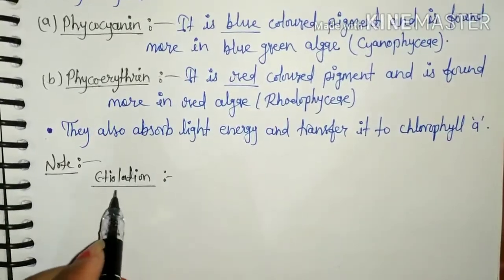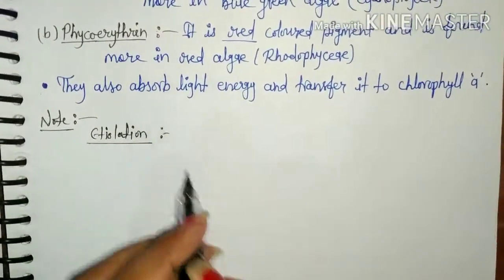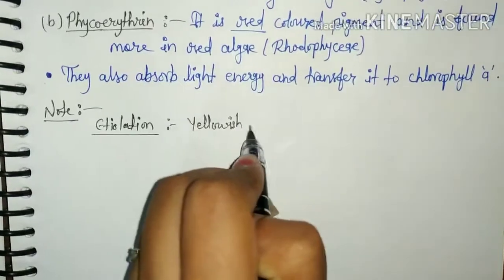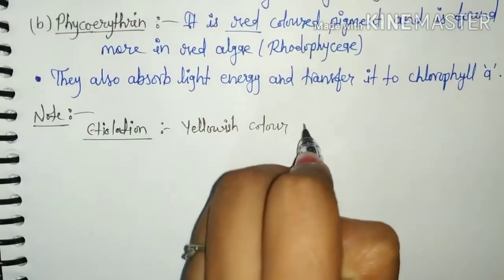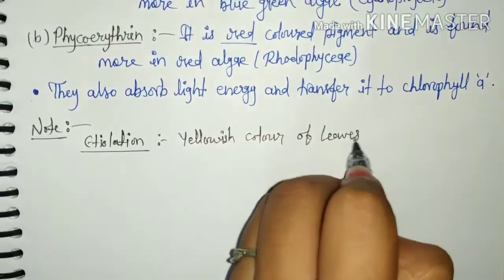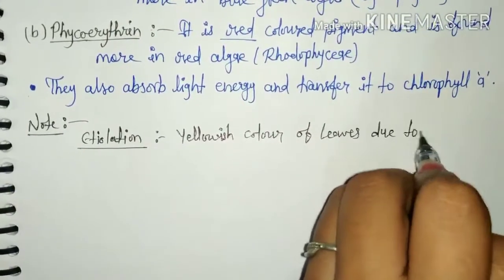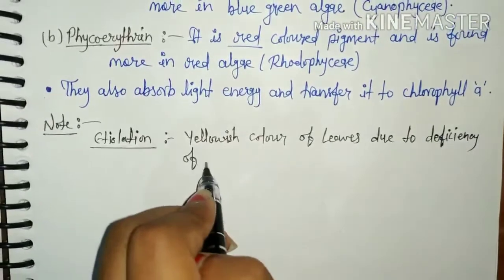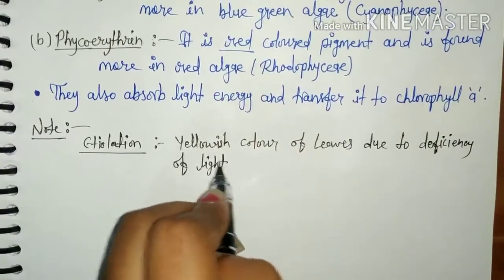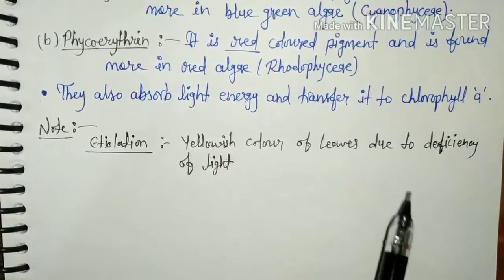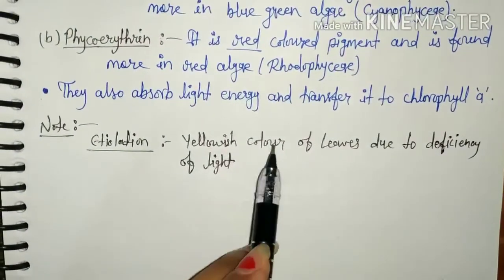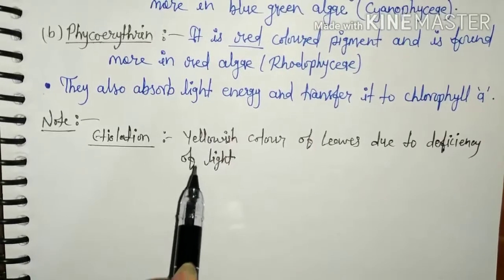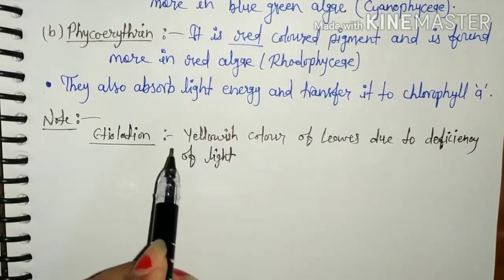There is a term called etiolation. Etiolation refers to the yellowing of leaves — when green leaves lose their color and turn yellow due to the disappearance of chloroplast or chlorophyll in the dark.